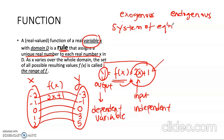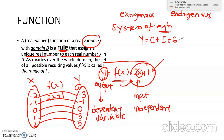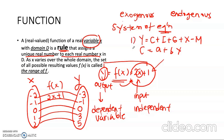So what is a system of equations? A system of equations is an equation that consists of more than one function. If previously in our first example we only analyzed one equation, a system of equations consists of more than two equations. For example, we have y (the GDP) equals c plus i plus g plus x minus m, and then the second equation would be c equals a plus b times y. So this is the first equation and this is the second equation.